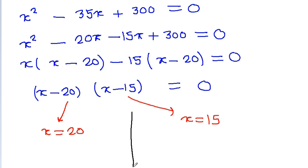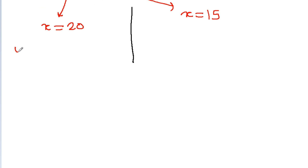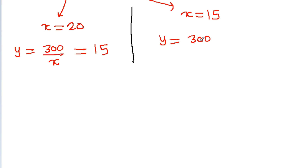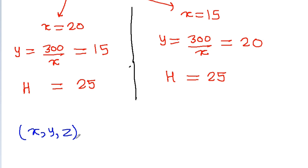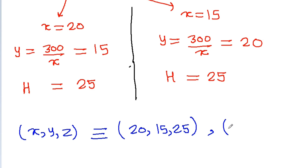When x equals 20, y equals 300 divided by 20 equals 15. When x equals 15, y equals 300 divided by 15 equals 20. In both cases, h equals 25. So we get two pairs: (x, y, h) equals (20, 15, 25) or (x, y, h) equals (15, 20, 25), which represent the same triangle.